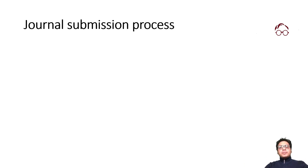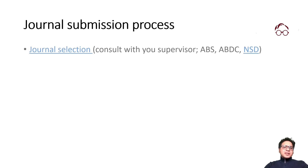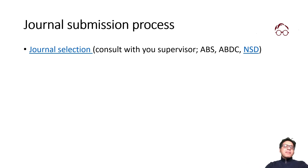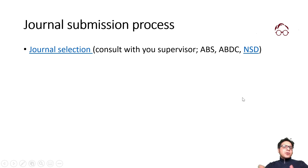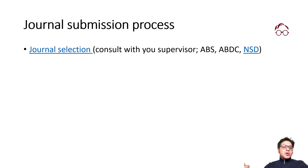Now a little bit about the journal submission process. You first have to select a journal. One easy approach is to look at your reference list — the journals that appear most often could be where you submit. You can also consult ranking lists like the ABS list, ABDC list, or Norwegian list to find good-ranked journals. We also have some videos on how to select journals — links are below in the description. Always consult with your supervisor.